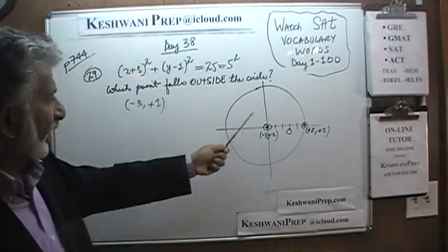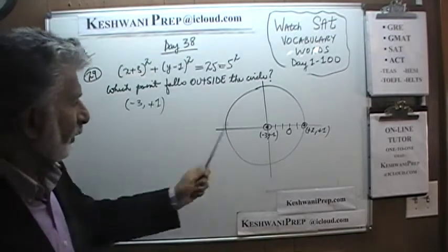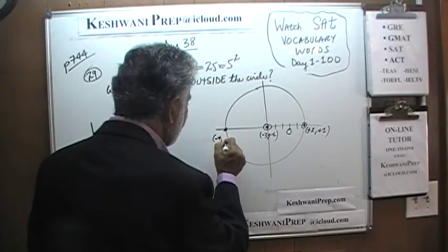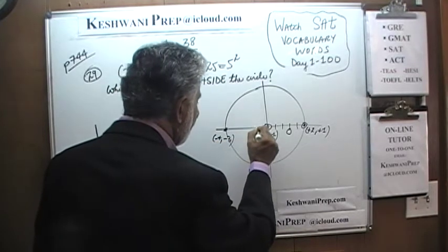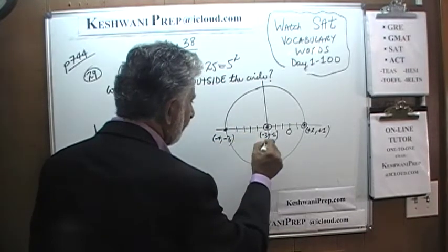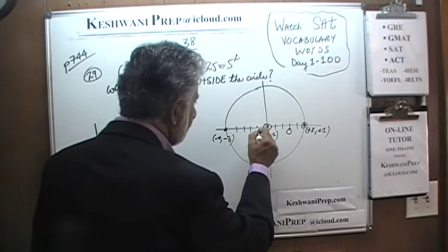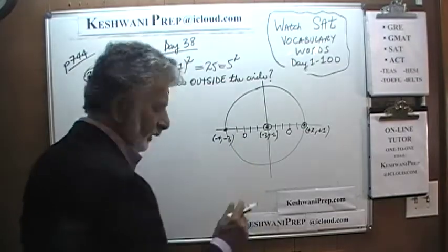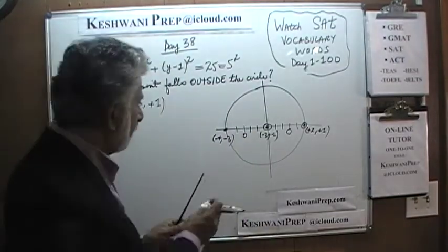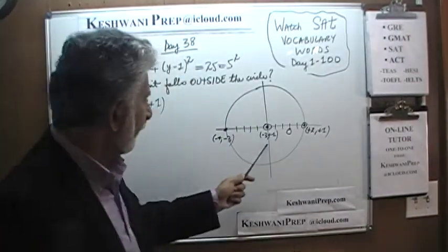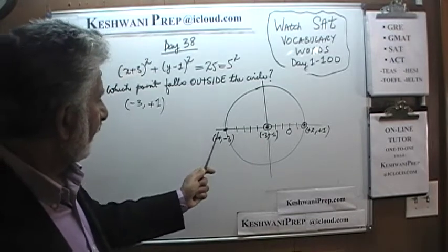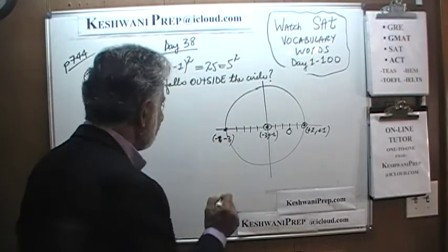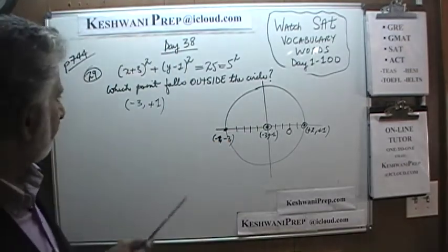Since the radius is 5, we go 5 units to the left from positive 1 and we should end up at negative 4. Negative 4 and negative 3. Going further, we should end up at negative 8 and negative 3.